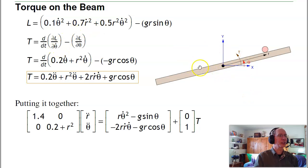Next, take the partial with respect to theta. That gives you the torque on the beam, which is actually my control input. The partial with respect to θ̇ is 0.2 θ̇ plus r² θ̇. The partial with respect to θ gives -gr cos θ. Now take the full derivative. The derivative of 0.2 θ̇ is 0.2 θ̈. Using chain rule, the derivative of the second term is r² θ̈. The derivative of the first term is 2rṙ θ̇ + gr cos θ. So here's the torque.